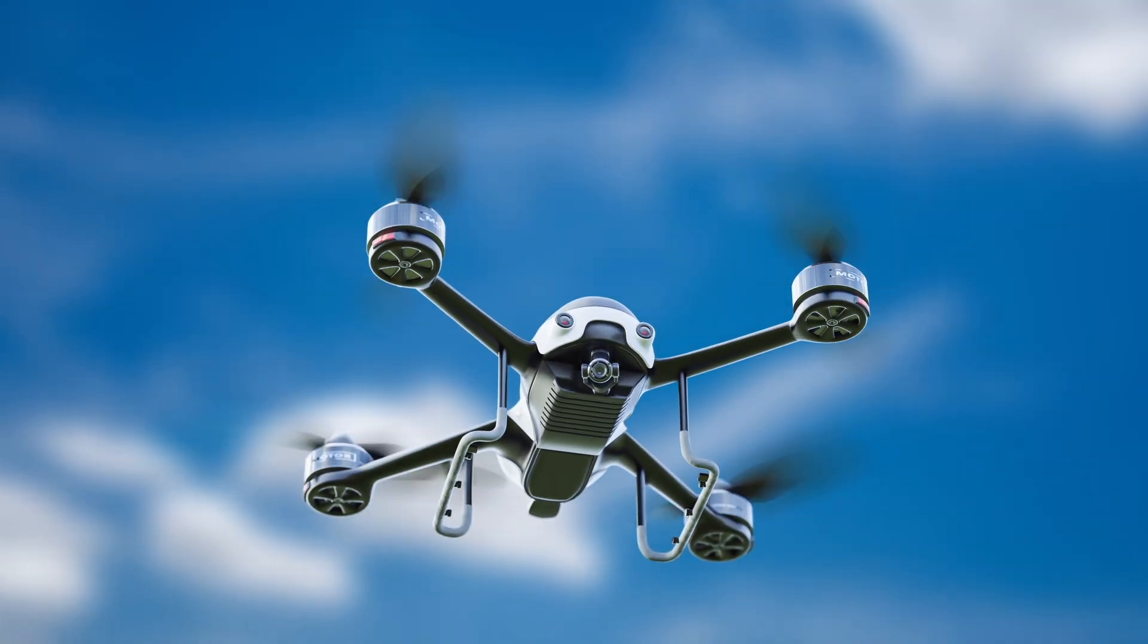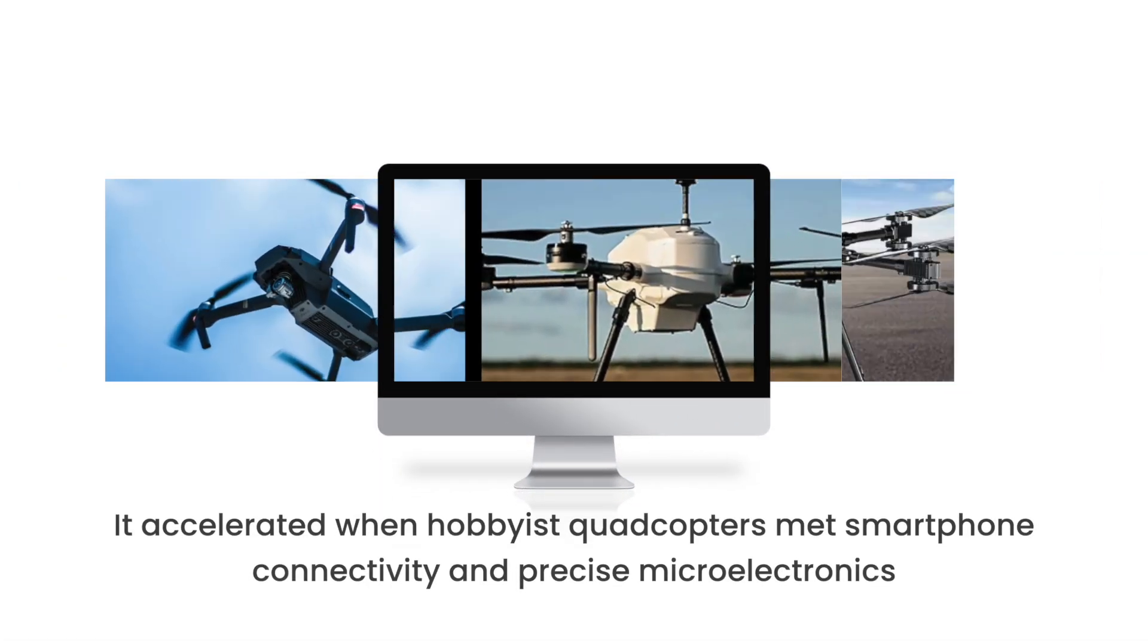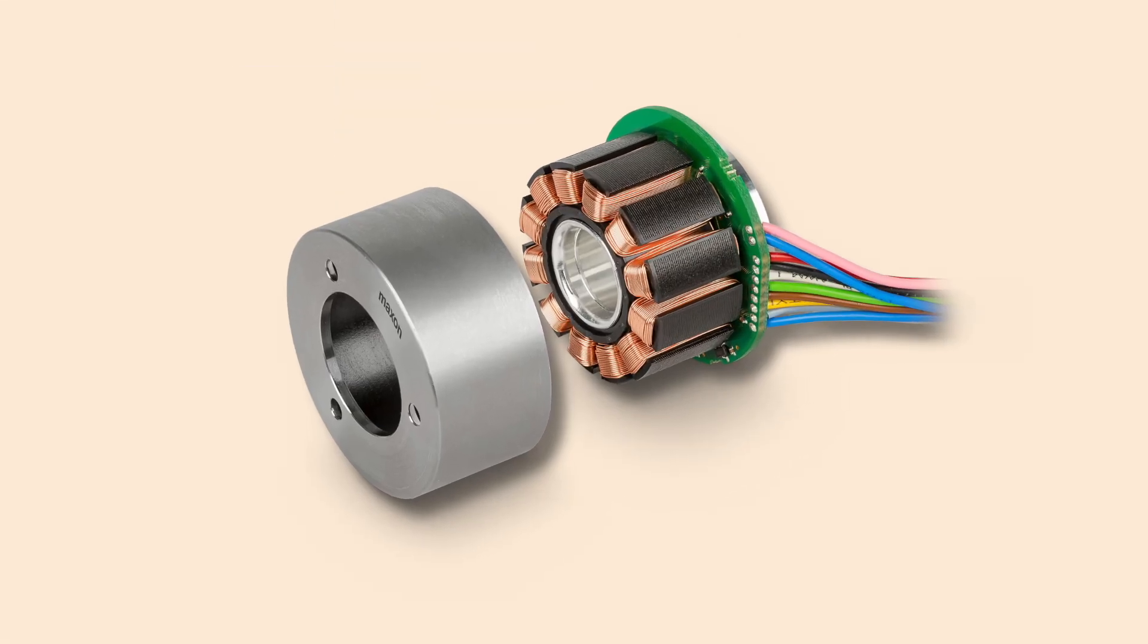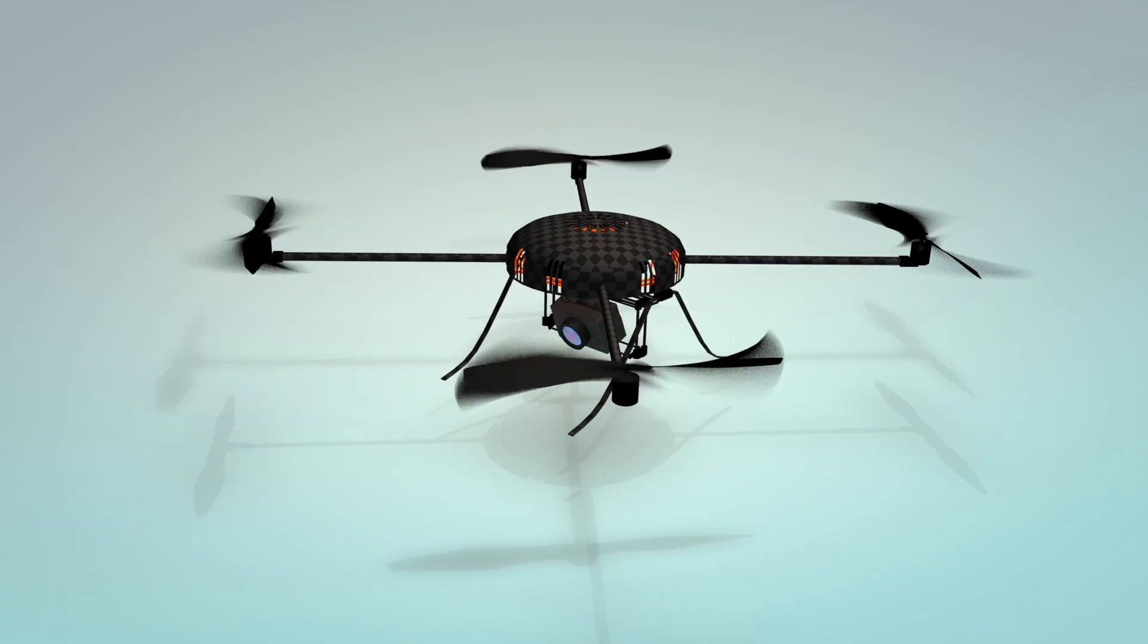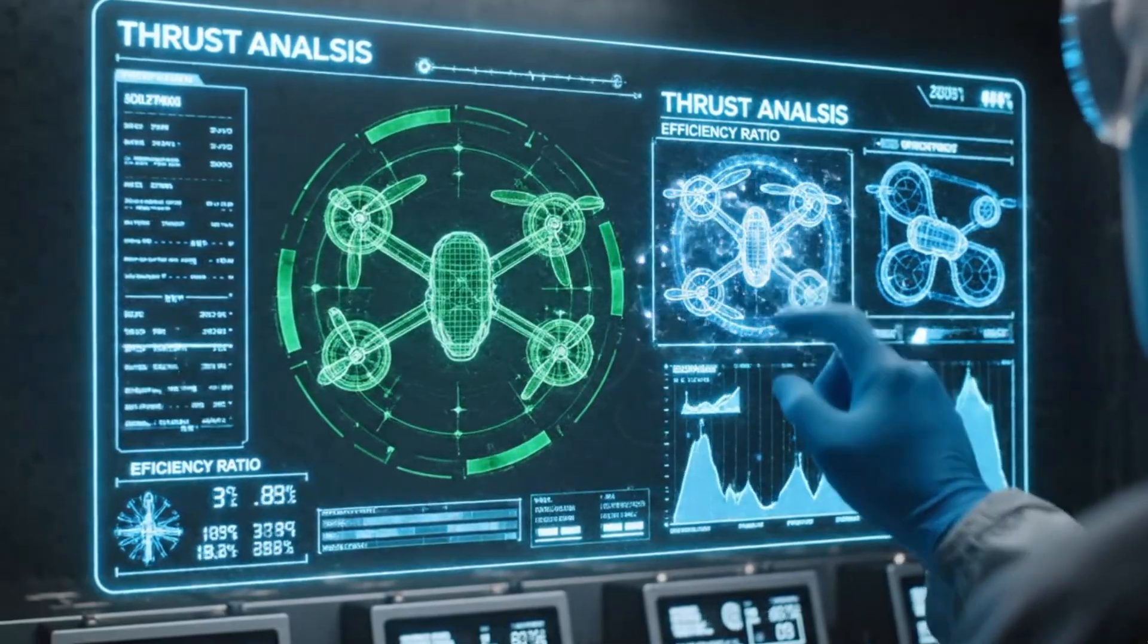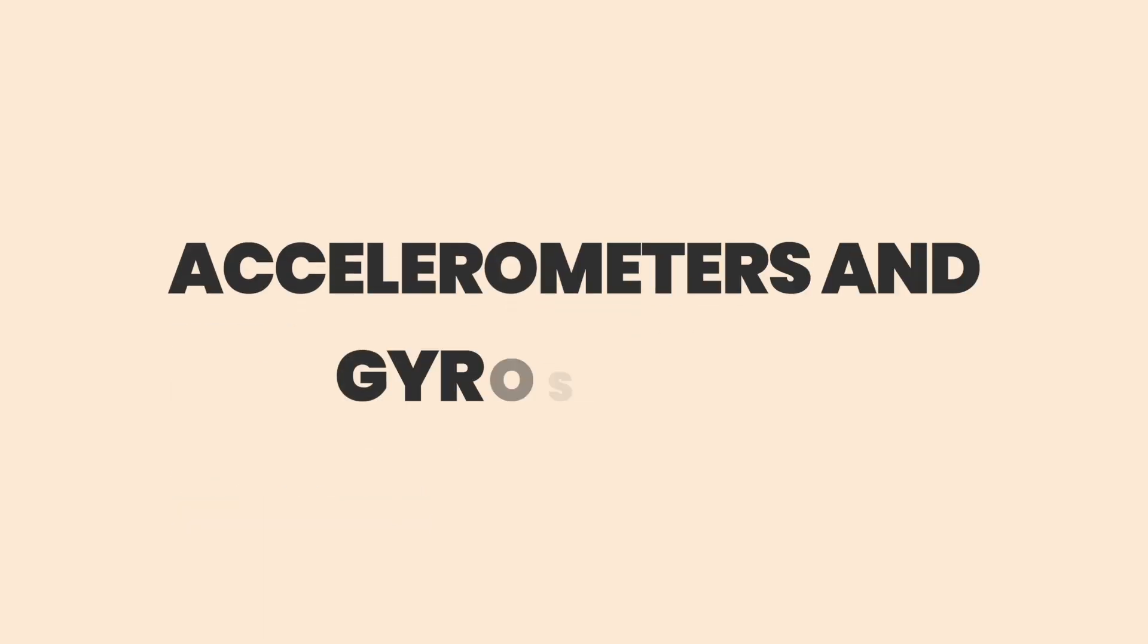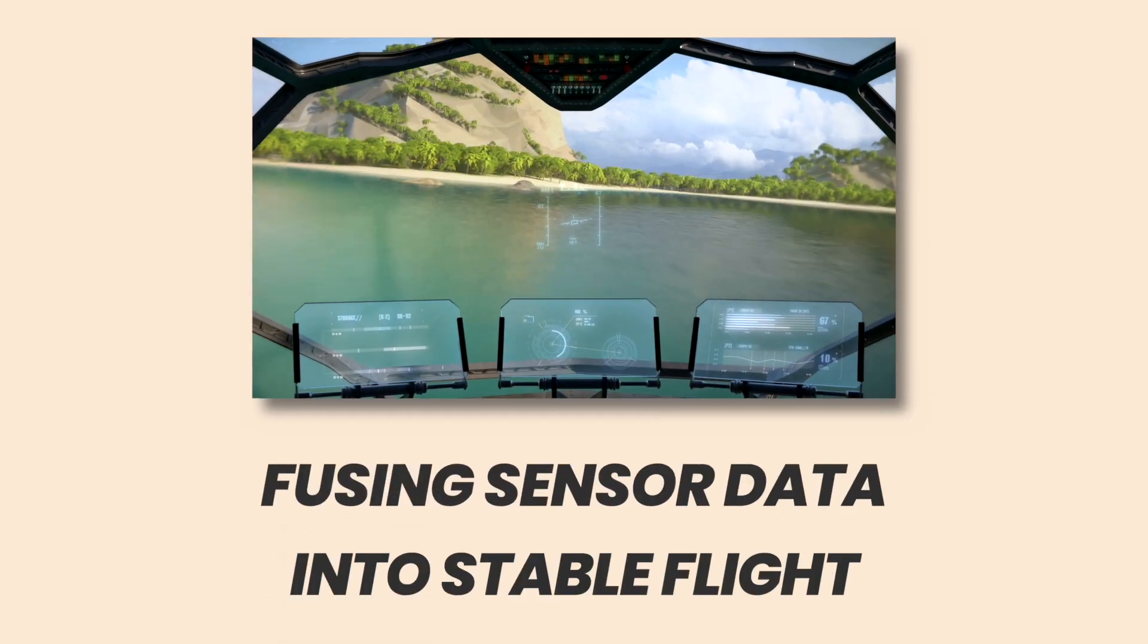The modern drone era didn't begin with toys. It accelerated when hobbyist quadcopters met smartphone connectivity and precise microelectronics. Early pioneers combined GPS modules, compact brushless motors, and lightweight LiPo batteries to create platforms agile enough for cinematography, but adaptable enough to be repurposed for much harder tasks. What changed everything was miniaturization of sensors and the flight controller. Tiny circuit boards that contain microprocessors, inertial measurement units IMUs, accelerometers and gyroscopes, and radio modules. These flight controllers run control loops hundreds or thousands of times per second, fusing sensor data into stable flight.